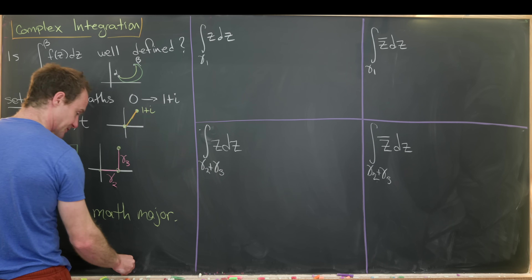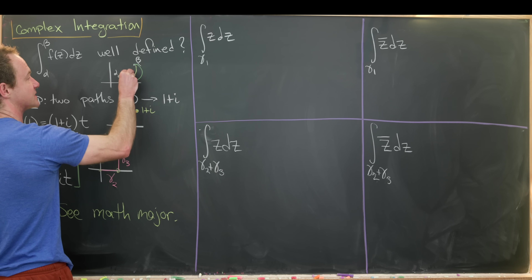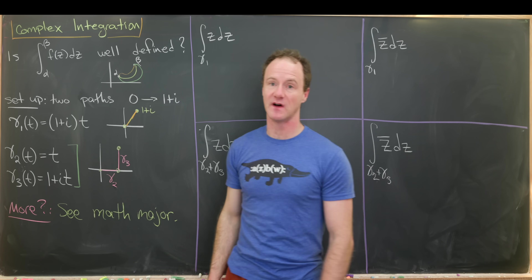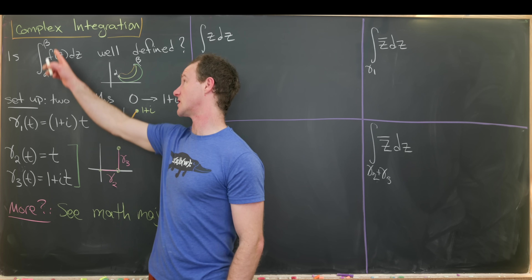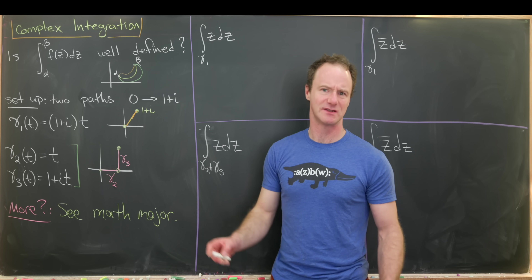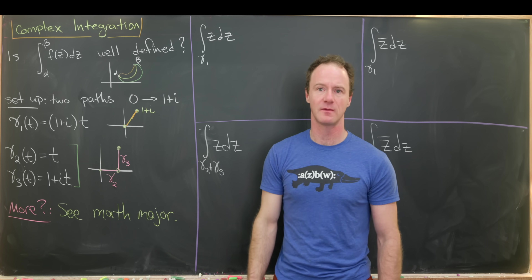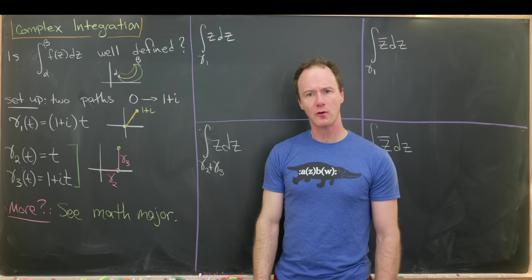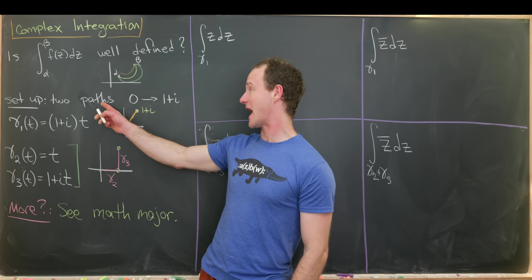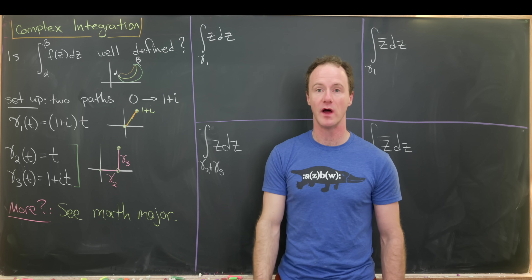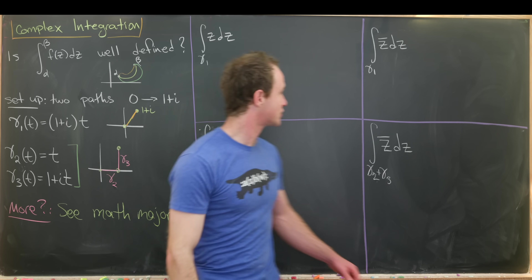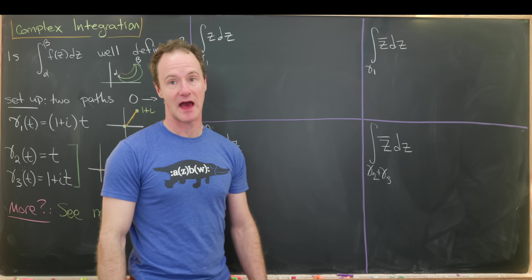So those are two such paths, and we could have another path kind of squiggling in the middle. If this is well defined — where all we're doing is specifying the starting and ending point — then that must say something about taking the integral over different paths. We're going to set up two paths that go from zero to the point 1+i, and then integrate two functions over those paths.